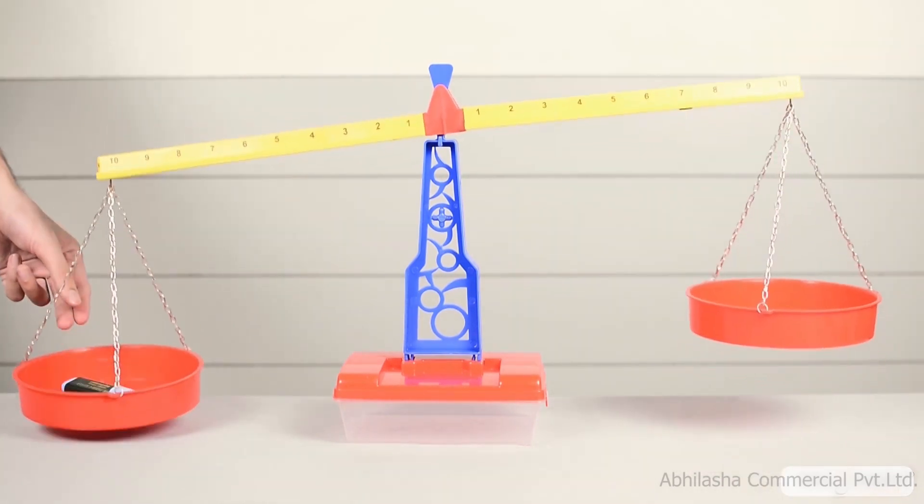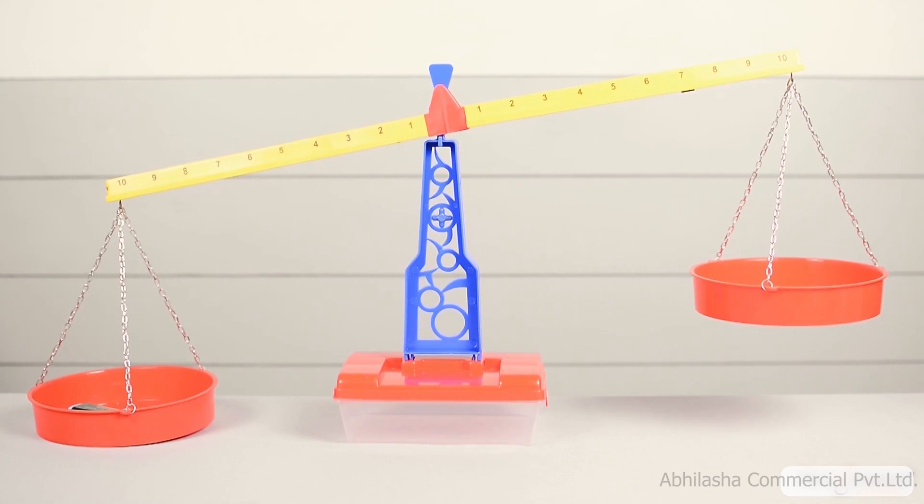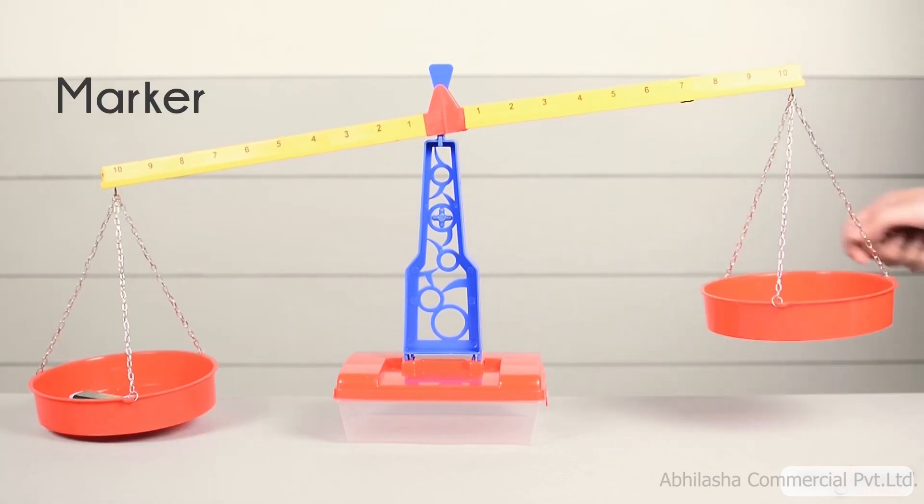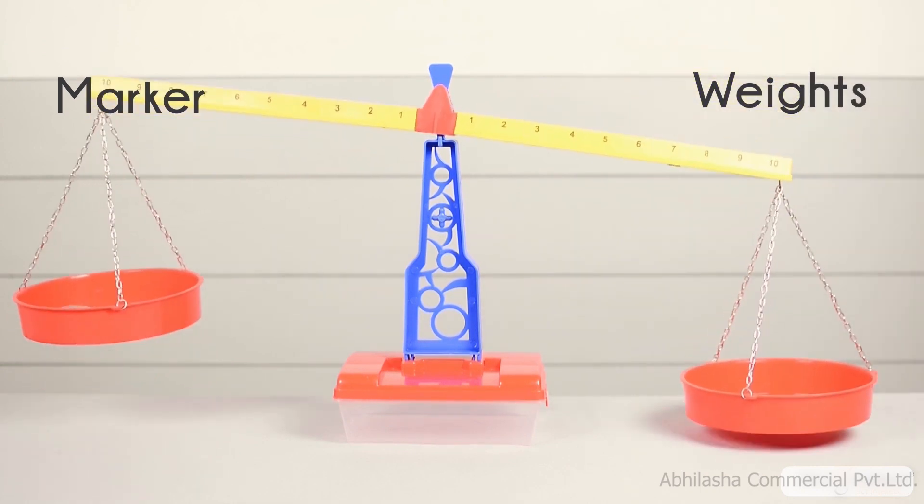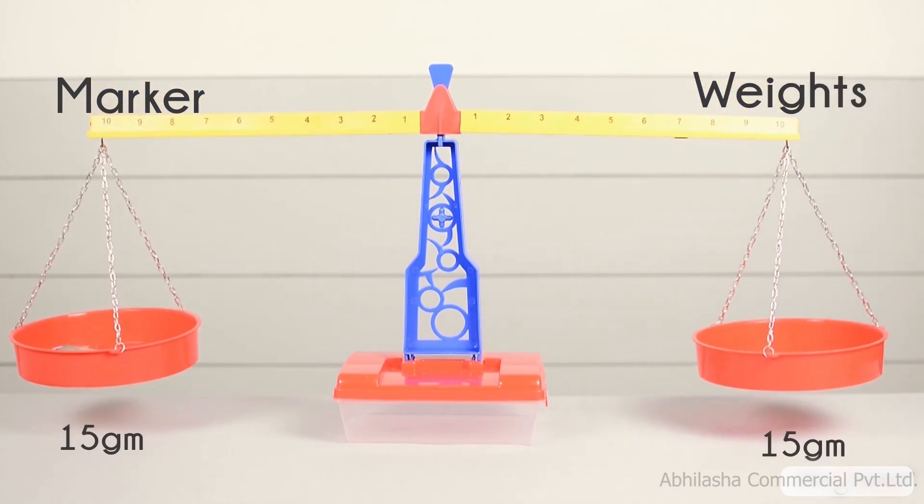For instance, on one side of the balance, we place a marker and on the other, we add weights with known masses until both sides are perfectly balanced. The mass of the marker is 15 grams once these weights have been added.